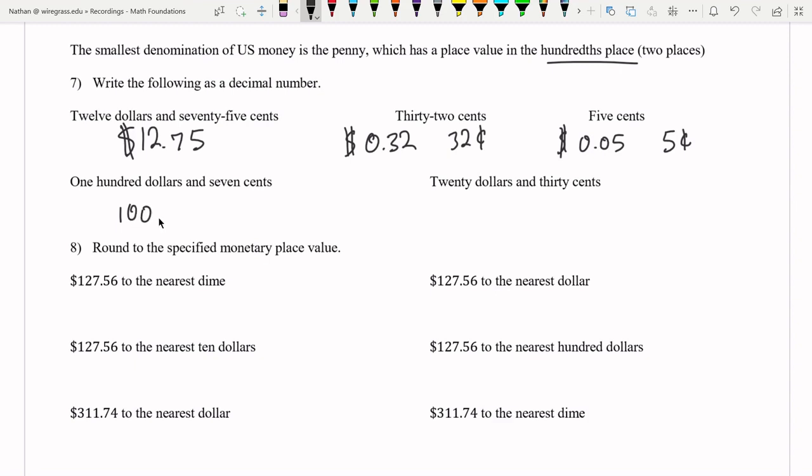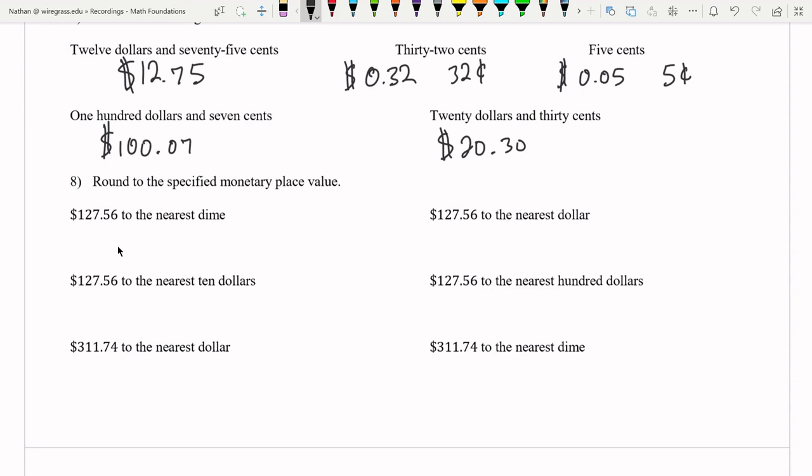$100 and seven cents, a hundred dollars. Meaning we're going to have one, two zeros and seven cents. Finally, $20 and 30 cents. Let's round these dollar amounts to the specified monetary place value, which of course has the same thing as a place value, but it's used in context. So the dime is the same thing as the tenths place. That's going to be where the five is. Six is our testing digit. That is five or greater. So we're going to round that up. So we're going to get $127.60 and I am going to write the full six zero there. I'm not going to write just 127.6, because this is a dollar amount. We're always going to have two places past the decimal. If we're going to show the cents in there.